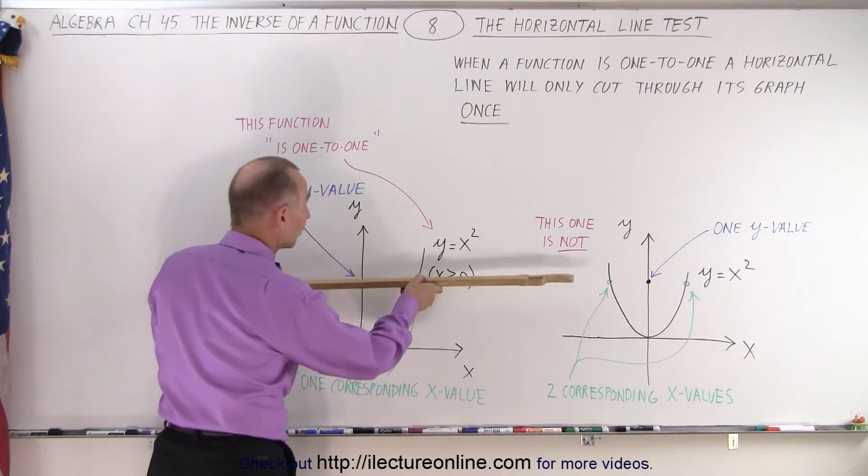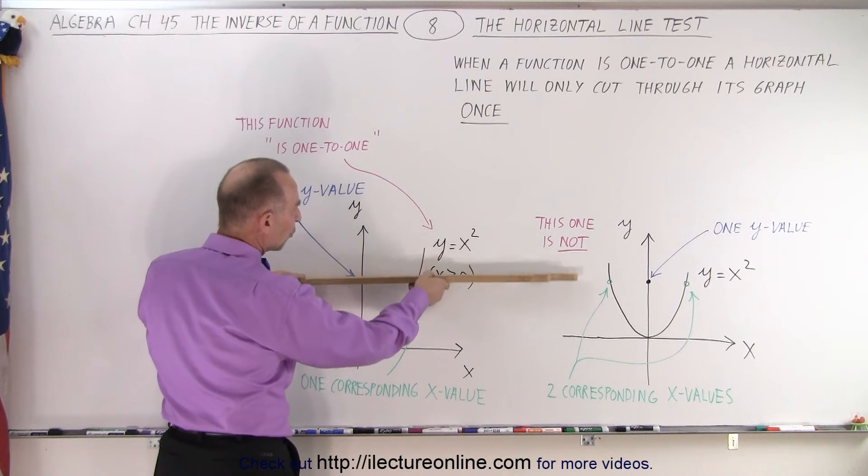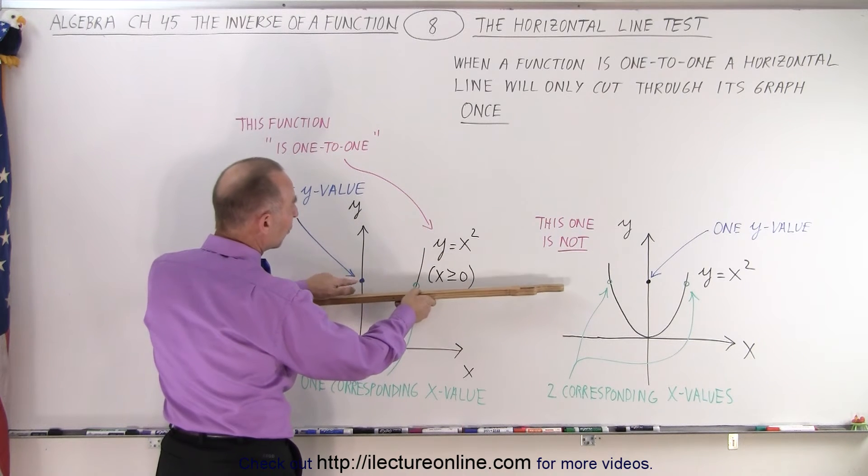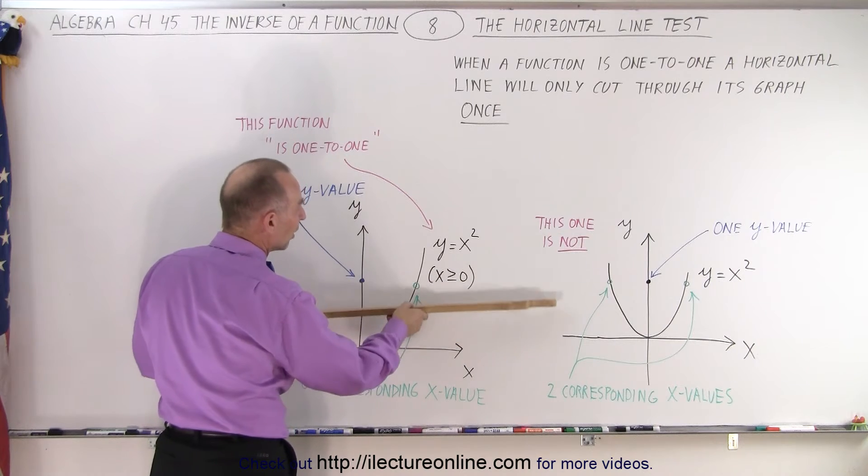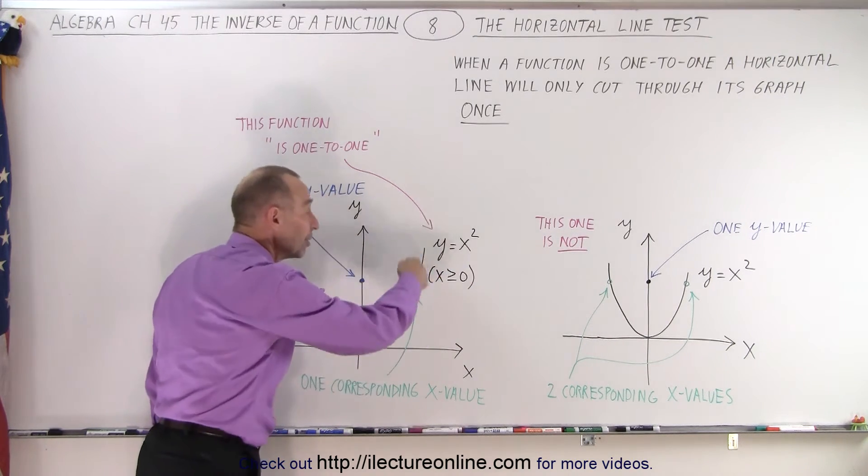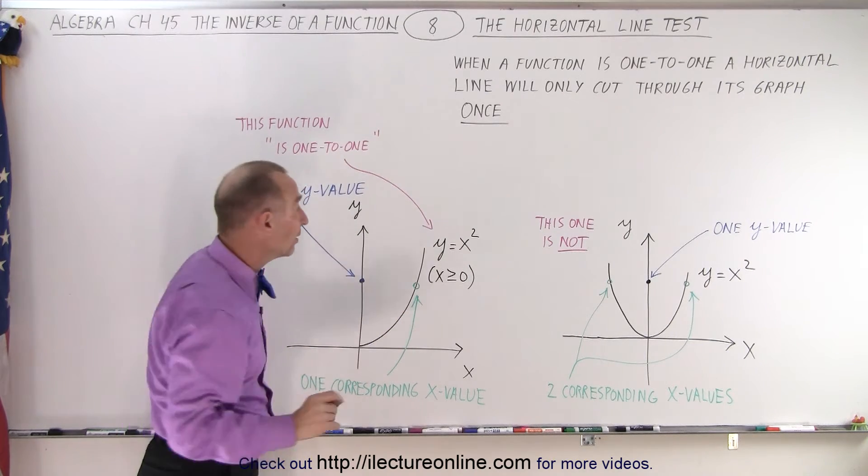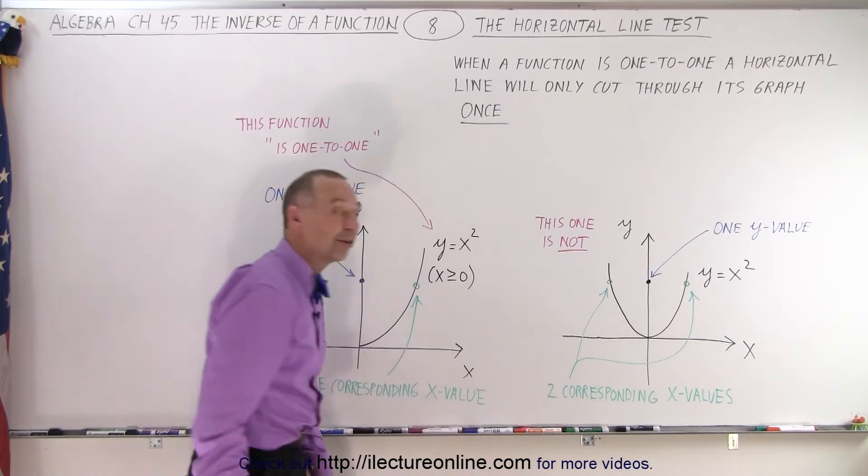But, if I do the same test over here, notice no matter where I take my straight edge, everywhere, there's only one value for Y for one value for X. It only crosses the graph once. And that's because we're only looking at the right half of the parabola. We're limiting ourselves to this. And that's why this is a one-to-one function and this is not a one-to-one function.